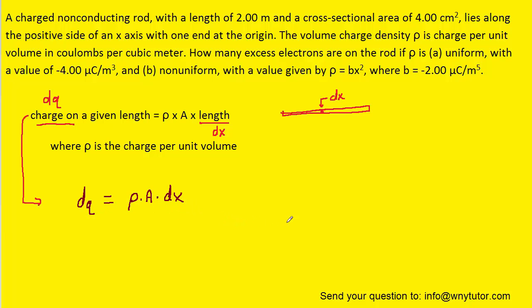So here is the charge equation written in its differential form. Now, we need a second equation that relates the number of electrons to the charge. So here is that equation: we're going to let n equal the number of electrons, and the q, of course, is going to be the total charge, so that would be in coulombs. And then the e is the standard charge on a single electron, that would be in coulombs per electron.